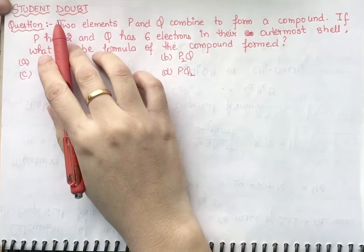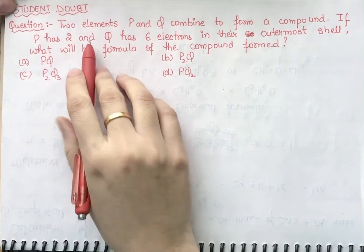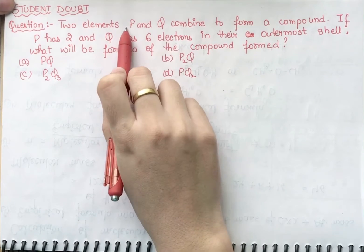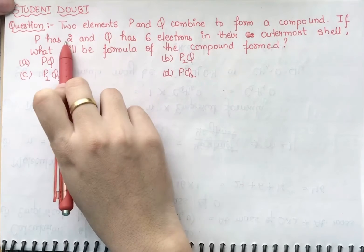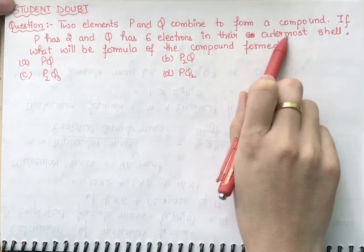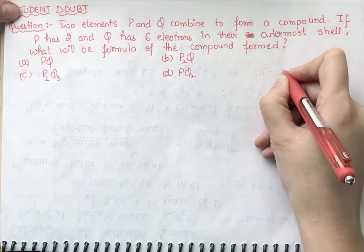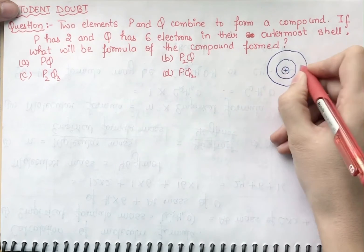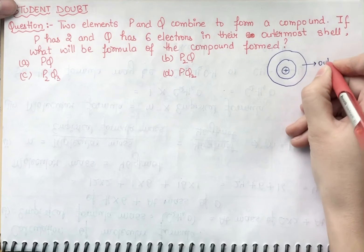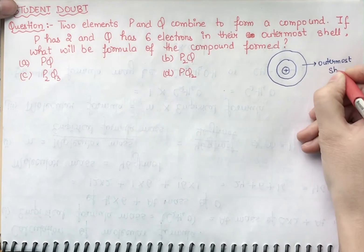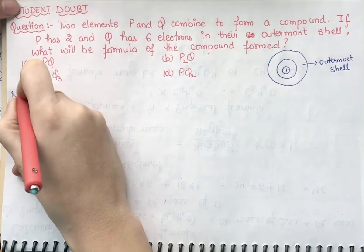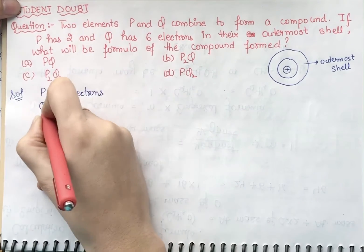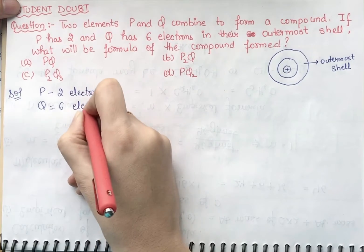Hello students, this is a student doubt. In this question, two elements P and Q combine to form a compound. P has two electrons and Q has six electrons in their outermost shell. Let's draw an atom — this is the outermost shell for both elements. P is having two electrons and Q is having six electrons in its outermost shell.